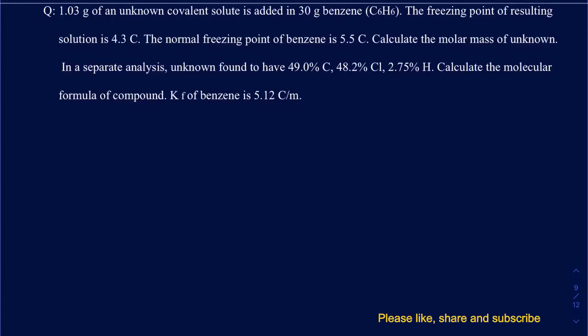The question reads: 1.03 grams of unknown covalent solute is added to 30 grams of benzene. The solute is a covalent compound, so keep in mind covalent compounds do not really break into ions unless it's a strong acid. The freezing point of the resulting solution is 4.3°C, and you're also given the freezing point of benzene. Since we're dealing with the freezing point colligative property, go ahead and write down the formula.